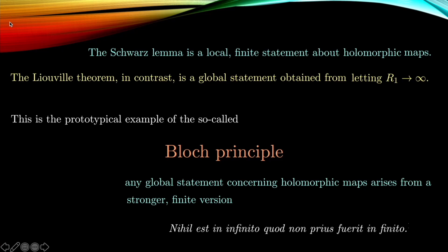This is a prototypical example of a general heuristic called the Bloch principle: any global statement concerning holomorphic maps arises from a stronger finite version of the statement. Liouville's theorem comes from the Schwarz lemma. This is captured in Bloch's 1925 paper with the quote: 'nothing in the infinite cannot come from the finite — everything in the infinite comes from the finite.'